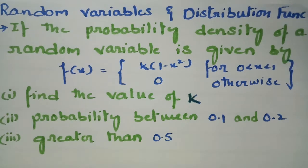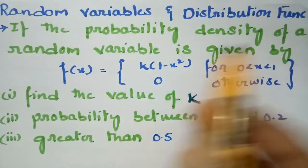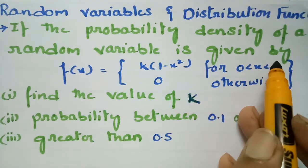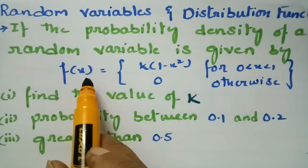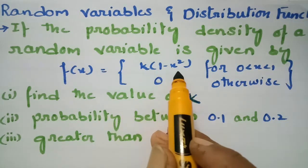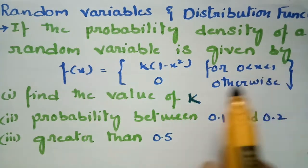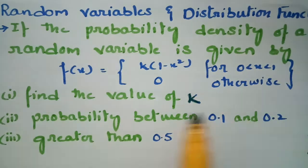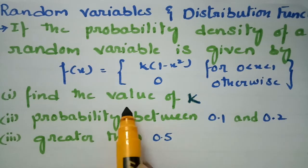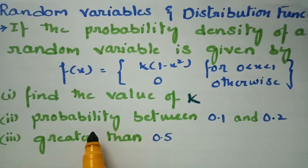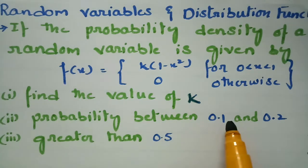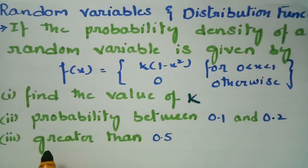Today's video we are going to solve a problem from random variables and distribution functions. If a probability density of a random variable is given by f(x) = k(1 - x²) for 0 < x < 1 and 0 otherwise, we have to find the value of k, the probability between 0.1 and 0.2, and also the probability greater than 0.5.